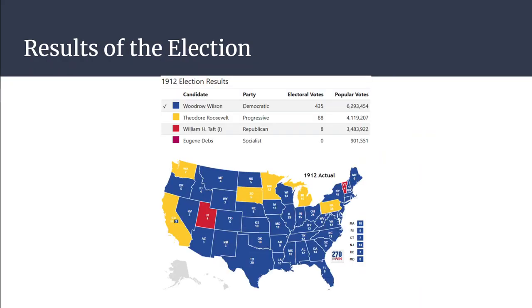The results of the election: Woodrow Wilson wins, but that's because the Republican Party was very, very split. Woodrow Wilson gets about 42 percent of the popular vote and 435 electoral college votes. Roosevelt comes in second with 27 percent and 88 votes, and Teddy Roosevelt was in second place in most of the states.